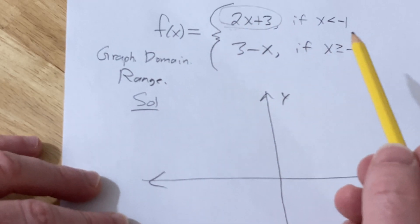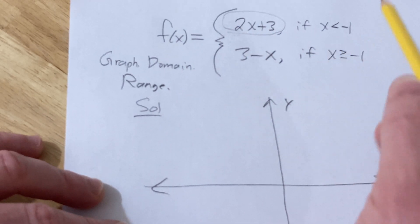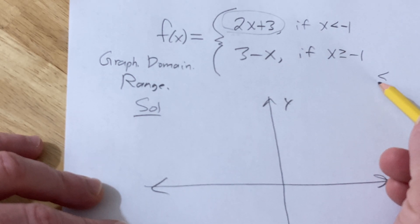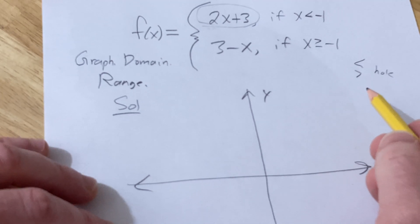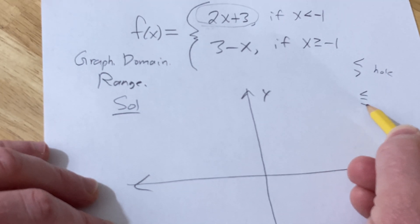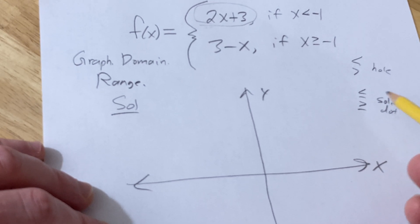So the trick is, whenever you have a piecewise function like this and you have a strict inequality, so if you have like a less than or greater than, you're going to have a hole. And if you have a less than or equal to or greater than or equal to, you're going to have a solid dot. It's going to be filled in. You can call it an open circle or a closed circle, I like to call them holes.